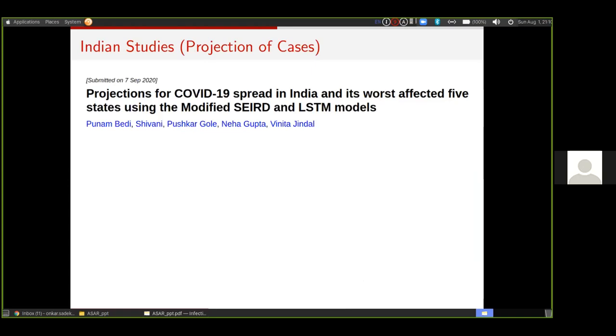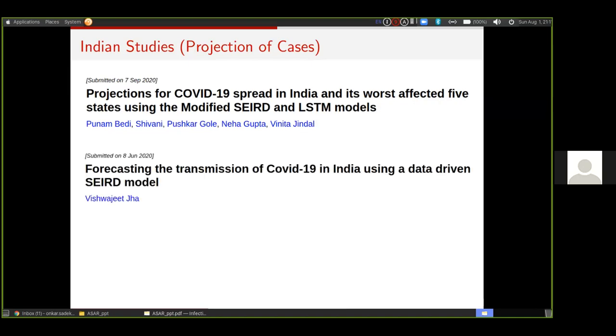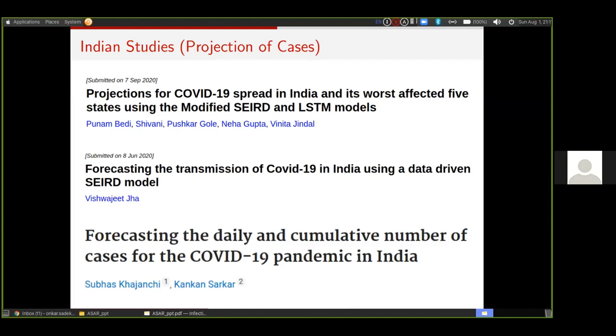Having said that, there have been some Indian studies in the past few months, but they were mainly of three categories. The first one is they either project the cases. You don't need to know or remember the names, I'm just giving examples of a few papers that were put up on preprint servers. One major class was projection of cases, so you can see forecasting or projection as keywords in the titles. They dealt with forecasting the daily cumulative number of cases for COVID-19.